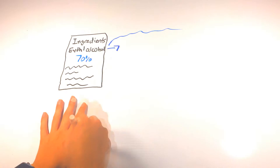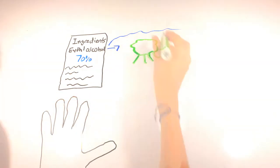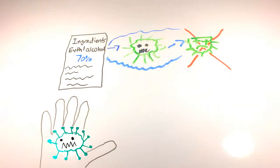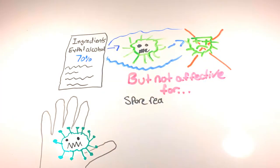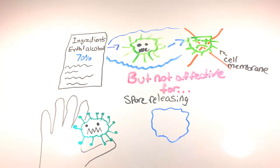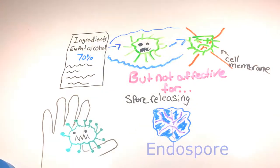The main ingredient found in hand sanitizer is ethyl alcohol at about 70% concentration. The ethyl alcohol mainly kills bacteria by ripping open the cell membrane, but is ineffective against spore-releasing bacteria or bacteria without an envelope.